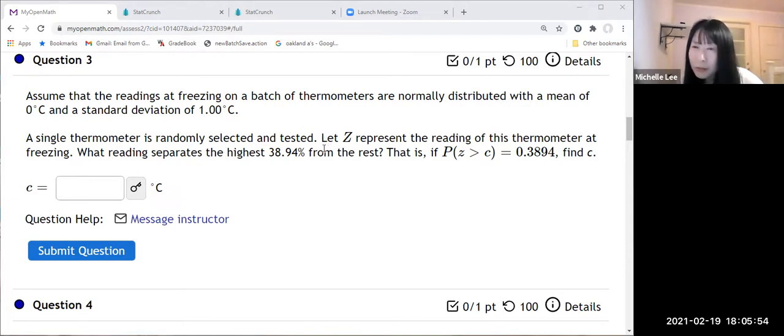Okay, this is very good because we can use mean and standard deviation is the same as the Z. I just remember 0.3894.